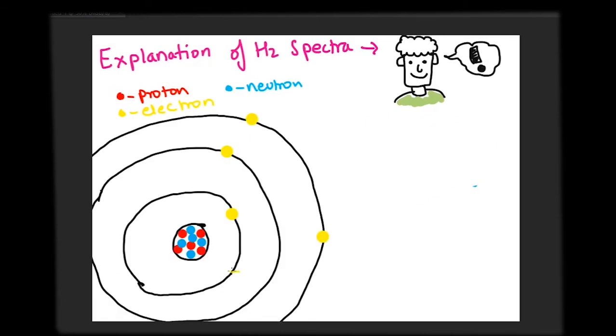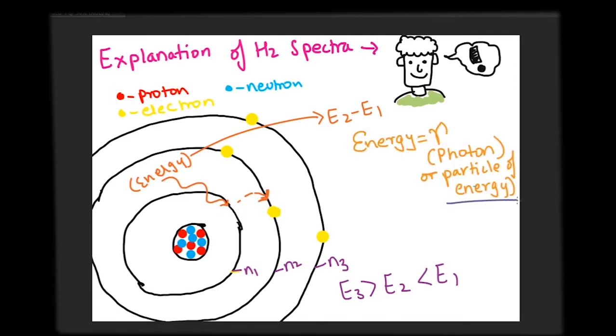Bohr postulated that electrons can go from the lower orbit to higher if they absorb radiation or photon which is the quantized particle of radiation with an energy exactly equal to the difference in the energies of the two states.